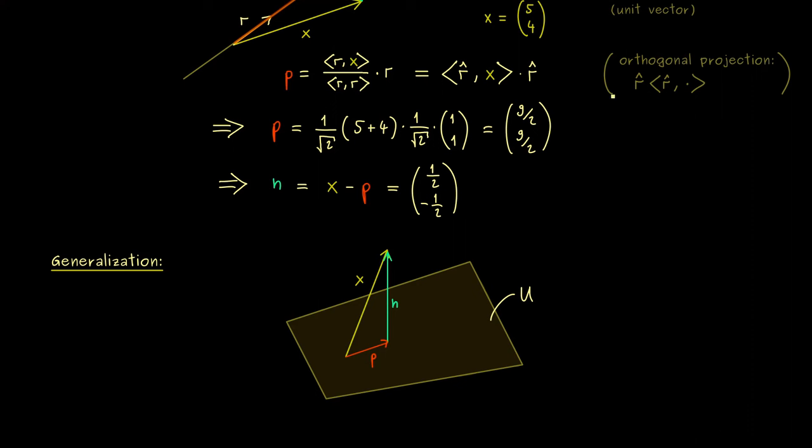In short, this means we can use a basis of U and maybe reuse what we already know from the one dimensional case. So for the two dimensional subspace here, this means maybe we can just use two one dimensional orthogonal projections to get the correct one here.